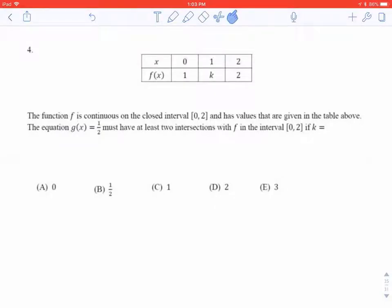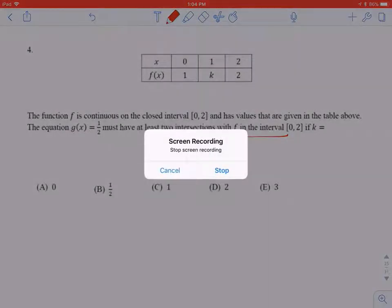Number 4, the function is continuous on the closed interval. So this is the intermediate value theorem. That's what I'm thinking when I hear this. And has values that are given in the table above. The equation g of x equals 1 half must have at least two intersections on this interval.